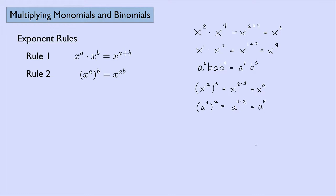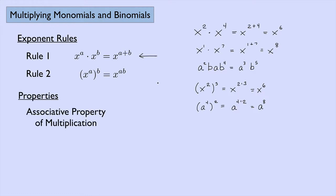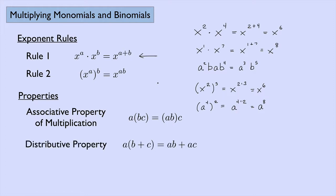When we multiply monomials and binomials we're primarily going to use rule number one, but I put both on here so you remember how they work. We're also going to use the associative property of multiplication — that says a times b times c equals a times b times c, so you can move the parentheses around. And then we have the distributive property, where a times the quantity b plus c is the same thing as a times b plus a times c.